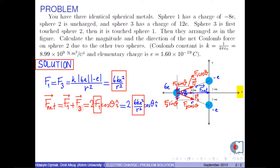If we put the expression for F1 into this equation, we obtain 12ke squared cosine theta over R squared i hat. From the right triangle in the figure, R can be found by the Pythagorean theorem as square root of 20 cm.